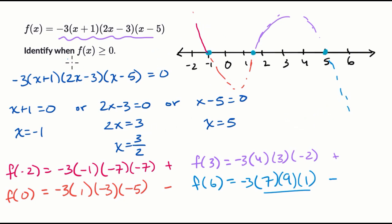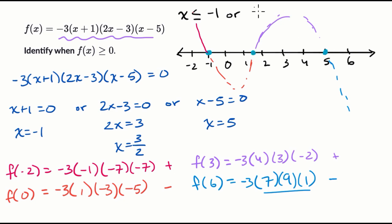So to answer the question — where is f of x greater than or equal to zero? It's greater than or equal to zero for all x's less than or equal to negative one, because it equals zero right there. Or we have the interval between three halves and five: three halves is less than or equal to x, which is less than or equal to five. These are the intervals over which f of x is greater than or equal to zero.